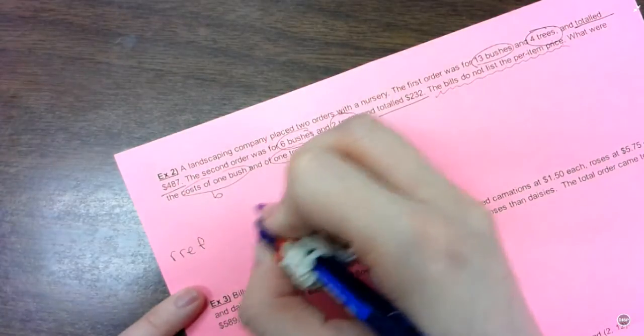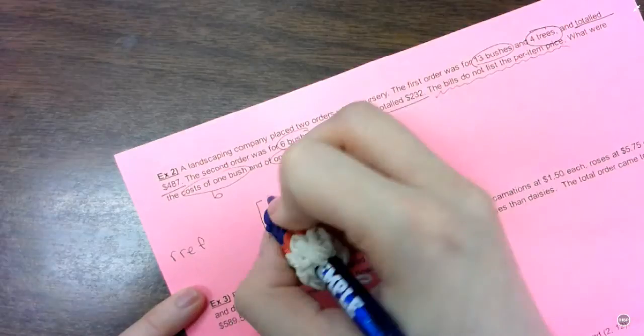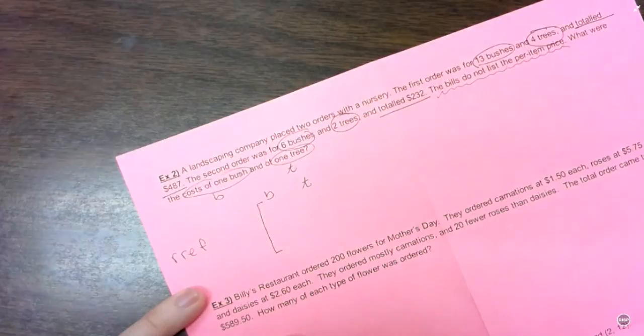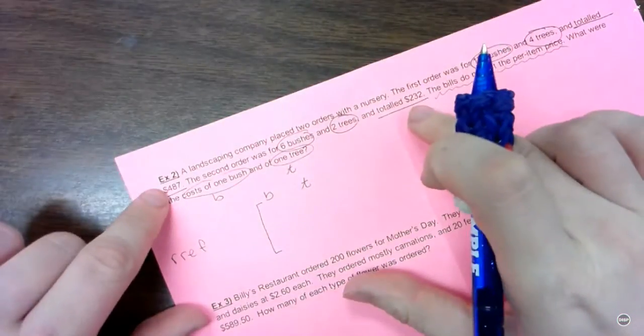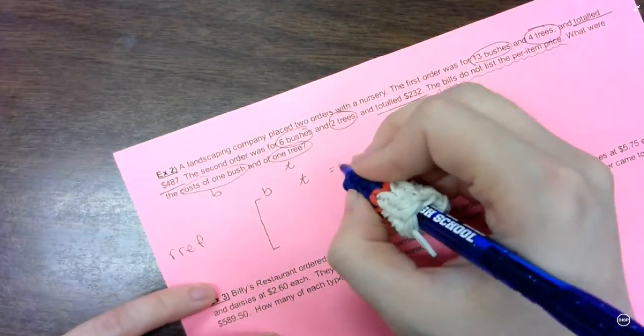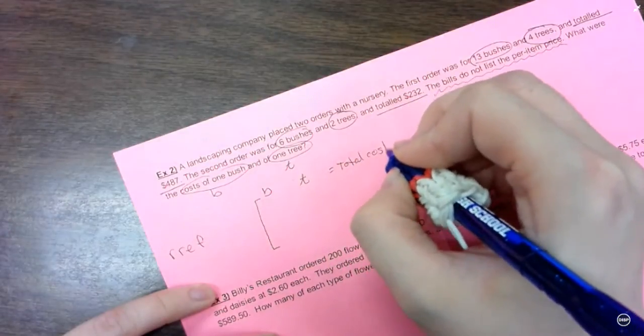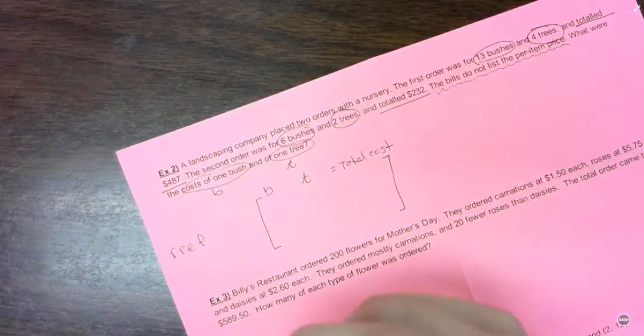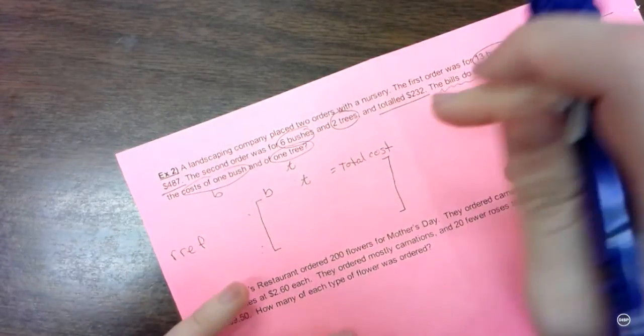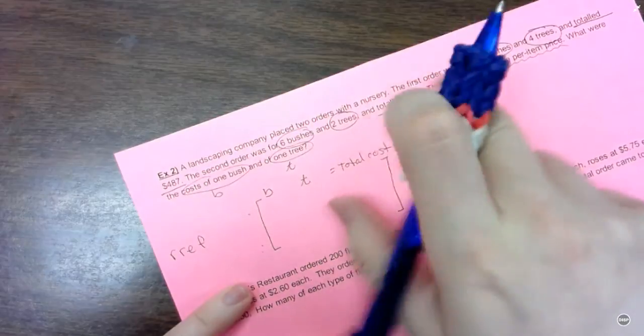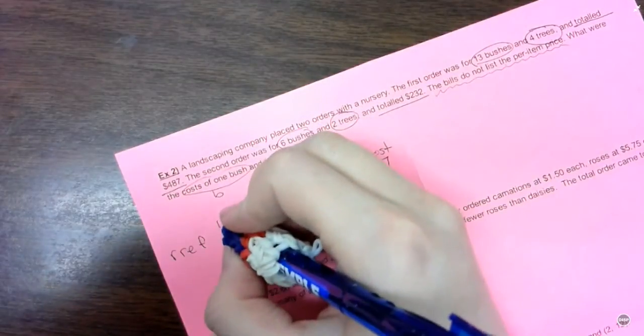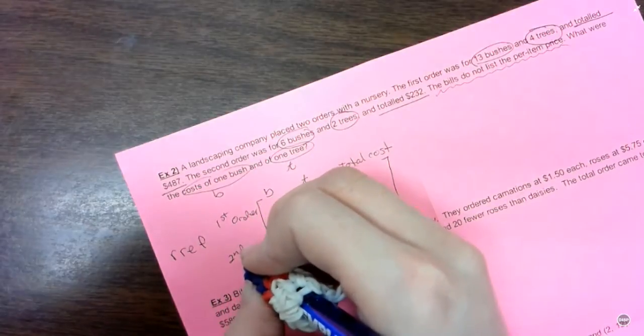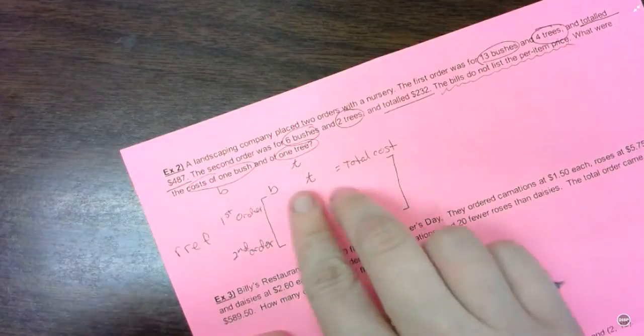So I am going to set up my matrix. So I need a column for bushes, a column for trees, and a column for the total cost. And then I have for the two equations, so they give me kind of two situations. I have first order and the second order.